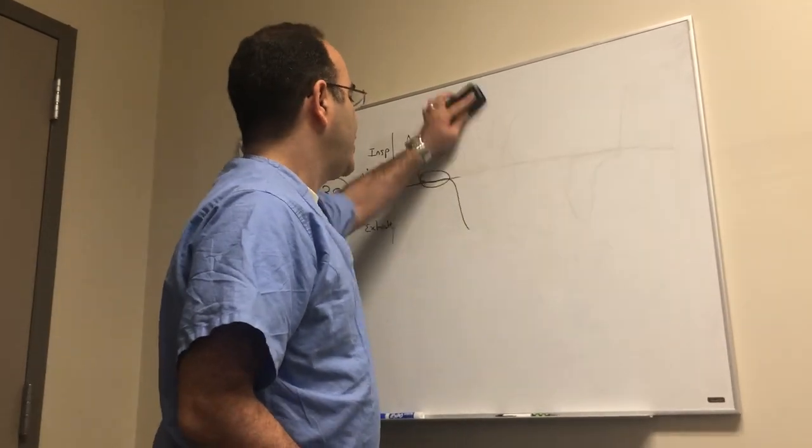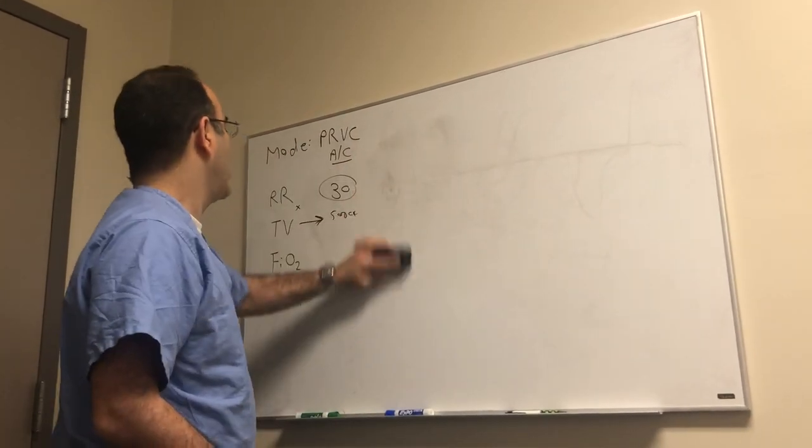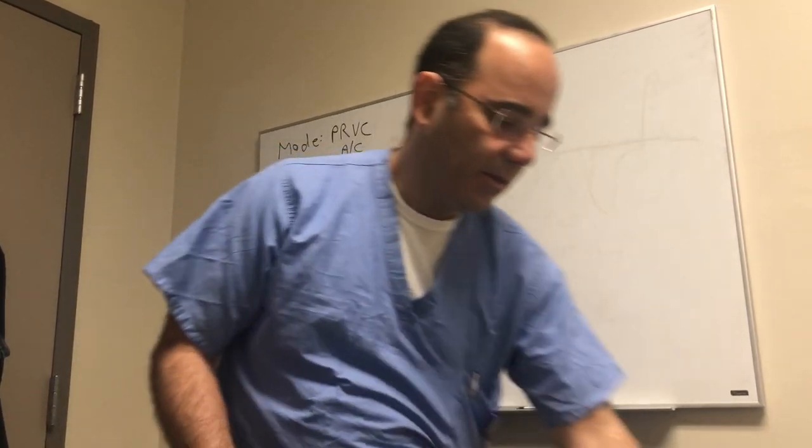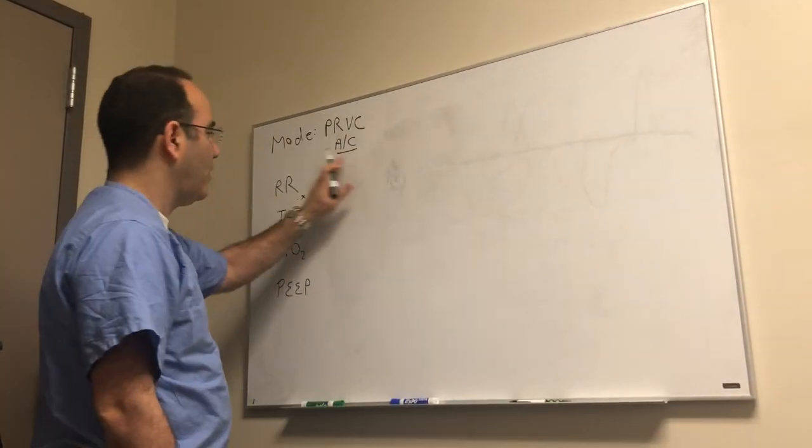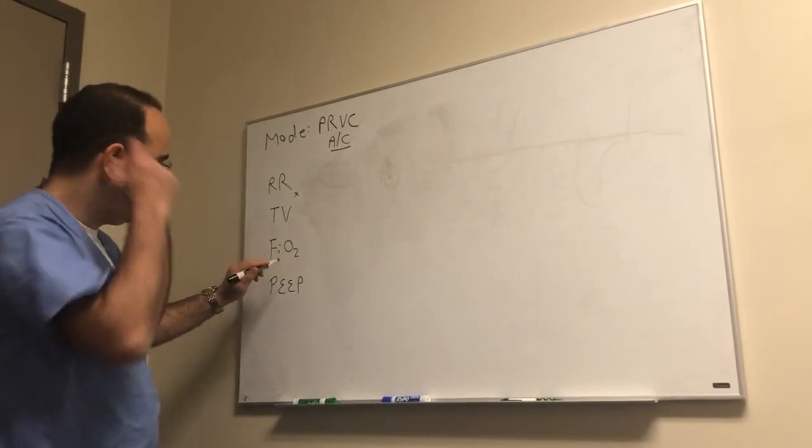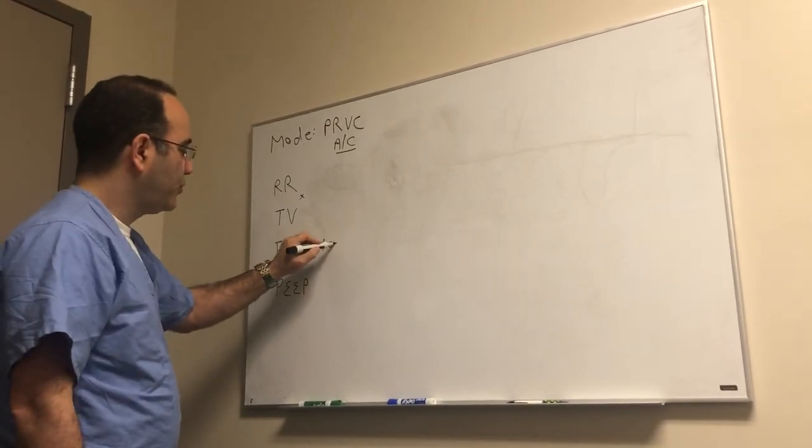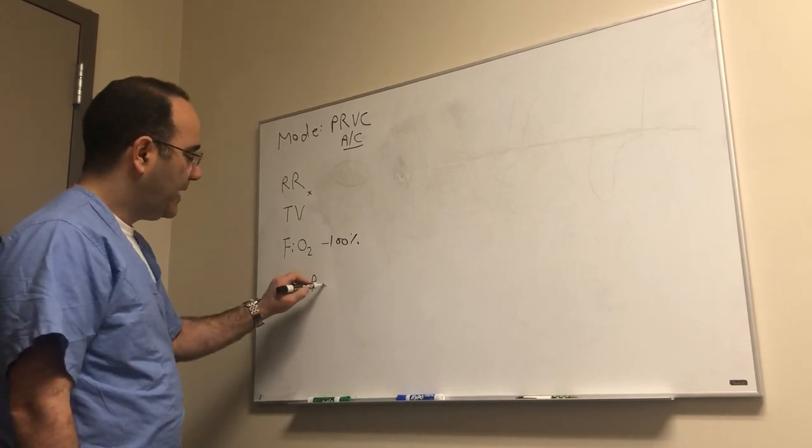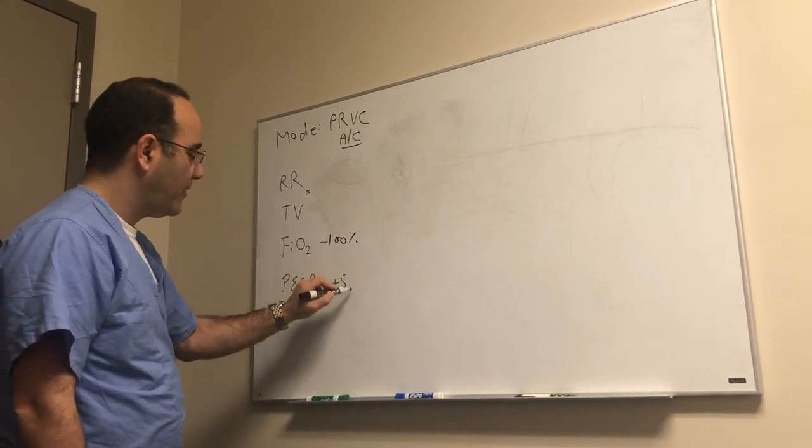That's the conversation around minute ventilation and auto PEEP and the tidal volume and how you can figure all that out. Let's talk about FiO2 and PEEP. Obviously we're going to start with an FiO2 of 100 percent, oxygen is cheap. Let's talk about the PEEP. Generally speaking everybody on the ventilator starts with a PEEP of five.